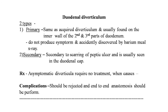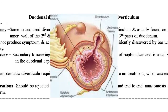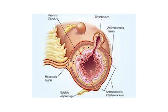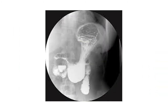The next topic is duodenal diverticulum, which has two types: primary and secondary. Primary is similar to acquired diverticulum and is easily found on the inner wall of the second and third parts of the duodenum. These do not produce symptoms and are accidentally discovered by barium meal X-ray. Secondary type is secondary to scarring of peptic ulcer and is seen in the duodenal cap. Asymptomatic diverticula require no treatment; when symptomatic, resection and end-to-end anastomosis should be performed.